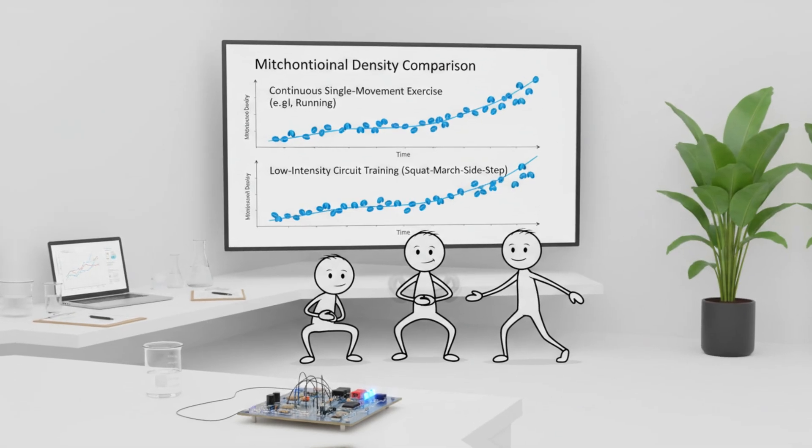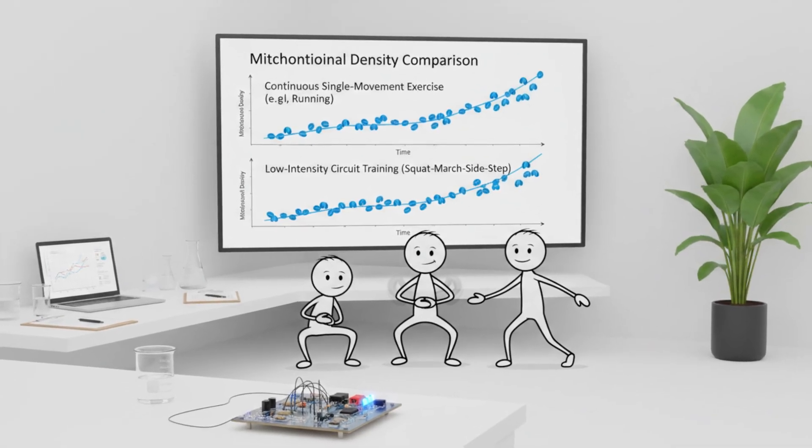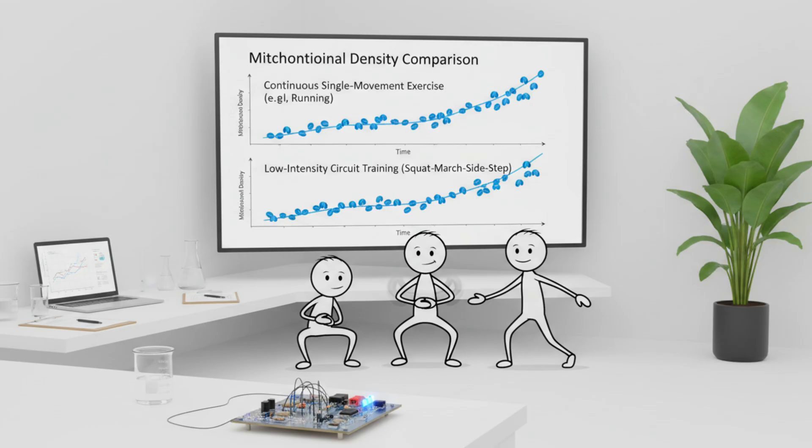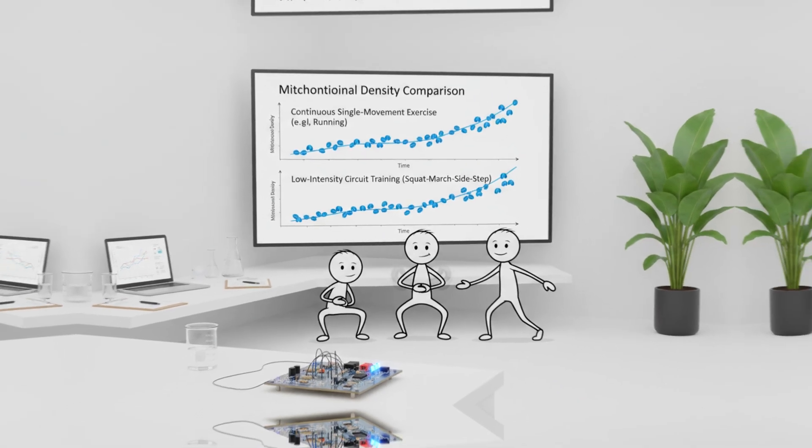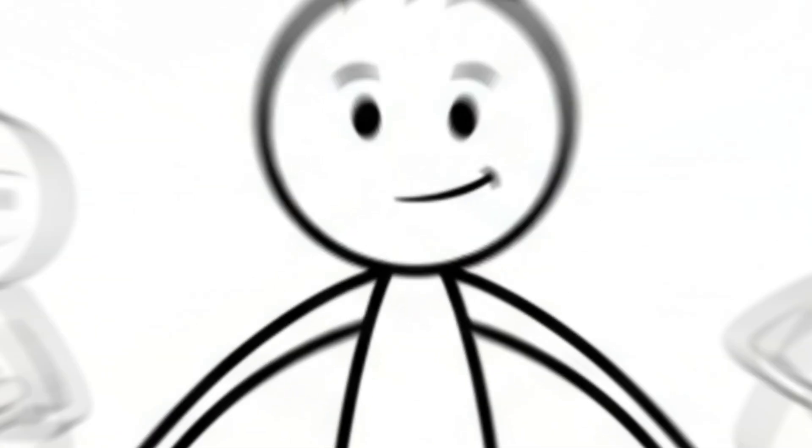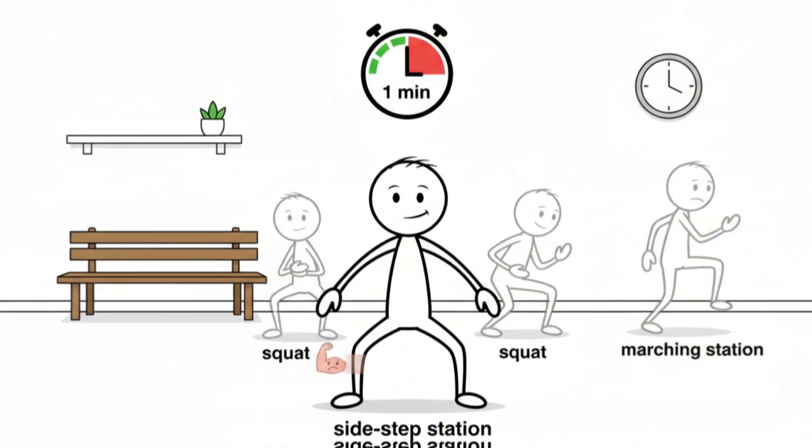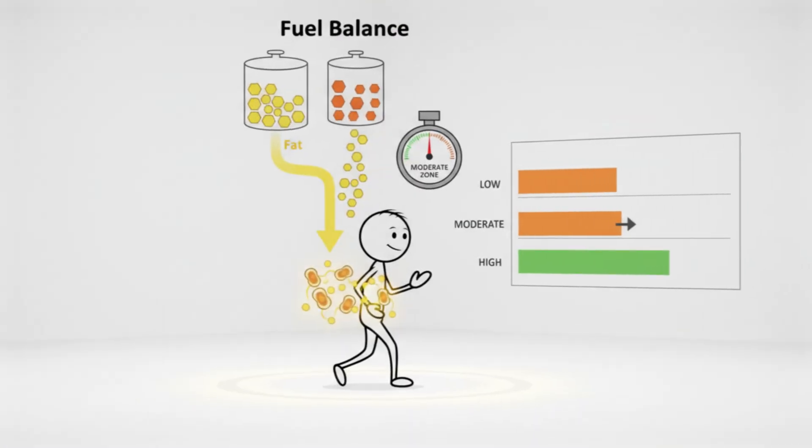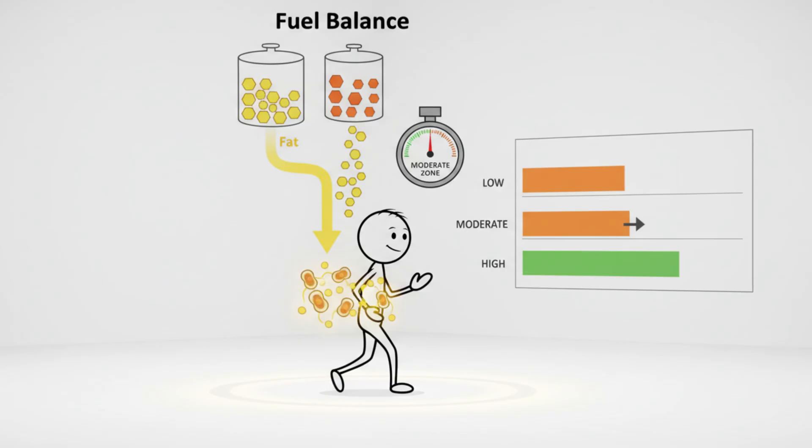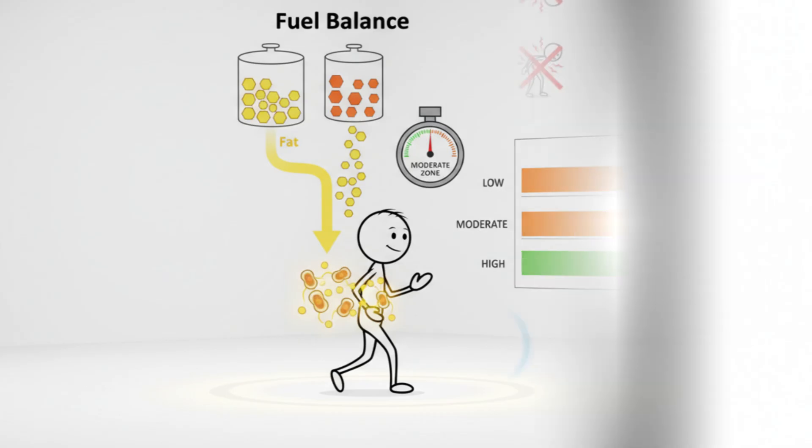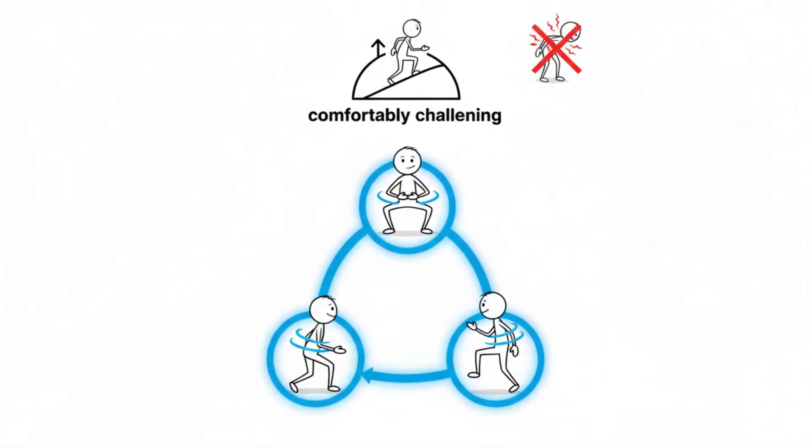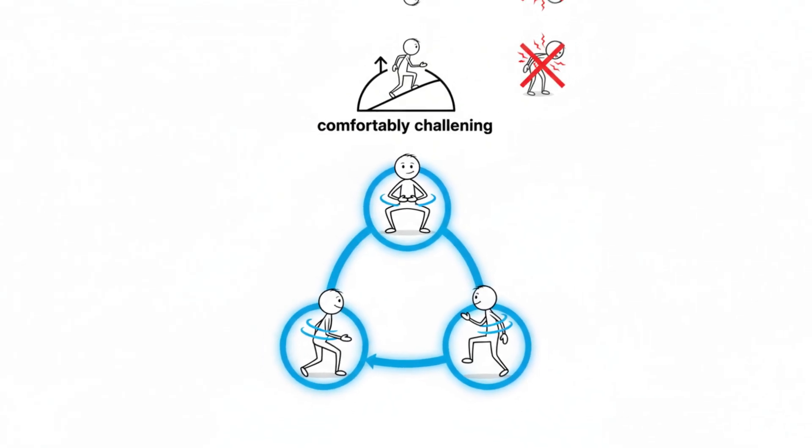Each exercise should be performed at a conversational pace. Studies on aerobic circuit training demonstrate that low-intensity, multi-movement circuits can improve mitochondrial density just as effectively as continuous single movement exercise, as long as the intensity remains moderate. Rotate every minute or two. This prevents local muscle fatigue, which can artificially spike intensity and helps maintain fat oxidation levels. The goal is comfortably challenging, not breathless. Your breathing should be smooth the entire time.